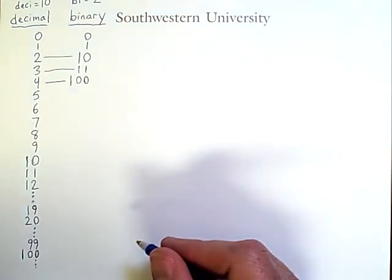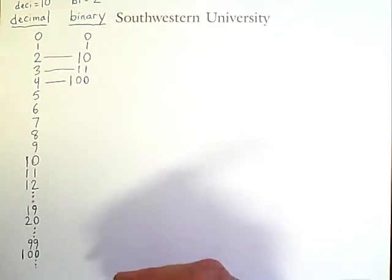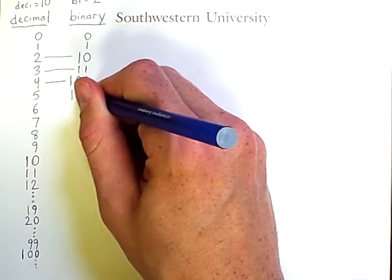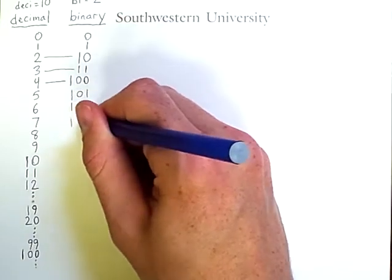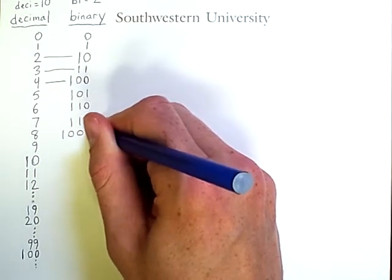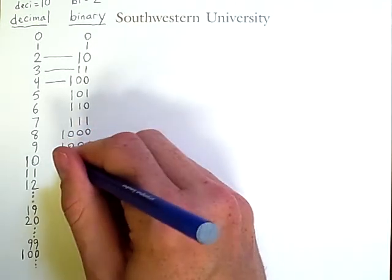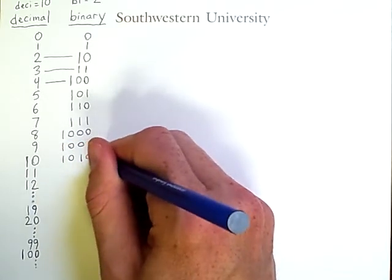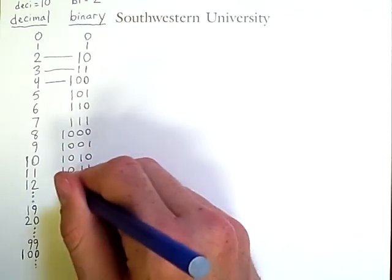Now, if you think you understand the pattern, this is a good point to pause the video and continue counting on through the rest of the digits here. But once you come back from that, you can check your work and see the numbers I'm about to count out. So we have 5, 6, 7, and then 8 causes us to add a new column. Then we have 9, 10, 11, and then 12.